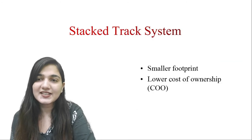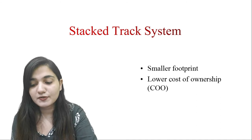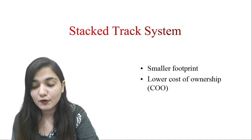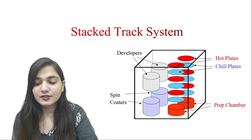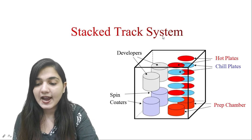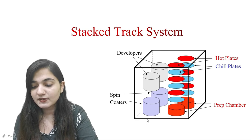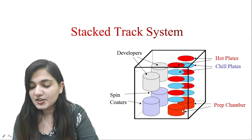If we have the stack trapper system it will give a smaller footprint and lower cost of ownership, which is called COO. This is how the stack trapper system looks. Here we have the preparation chambers and here we have the spin coater.